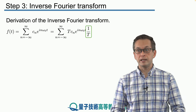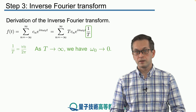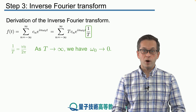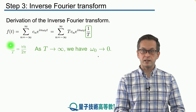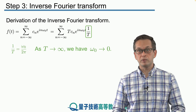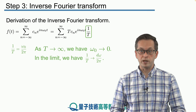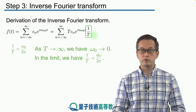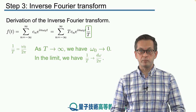Let's look at the individual terms, starting with the 1 over T term. We know the fundamental frequency ω₀ is given by 2π over T, therefore 1 over T equals ω₀ over 2π. From this expression we can see that as we stretch the period into infinity we are shrinking ω₀. In the limit where the period becomes infinite, this ω₀ becomes an infinitesimally small quantity, which we call dω. So this term, 1 over T, changes into dω over 2π.